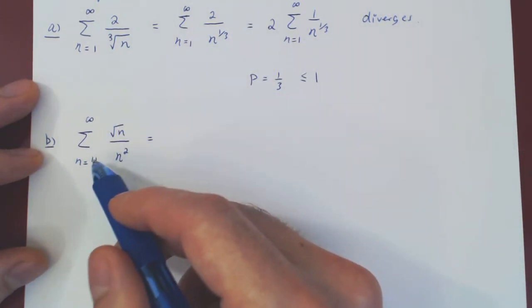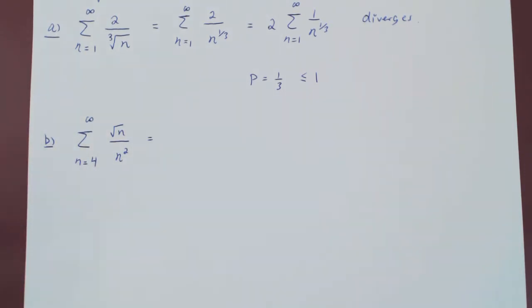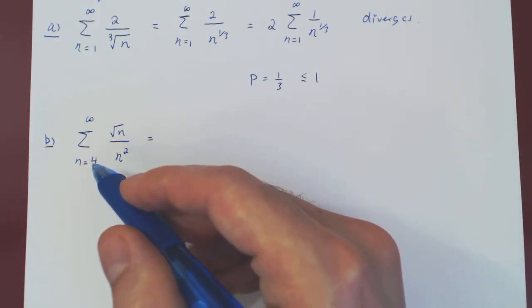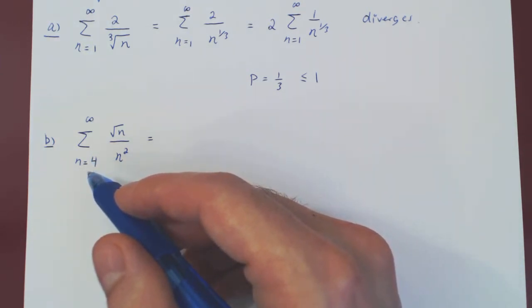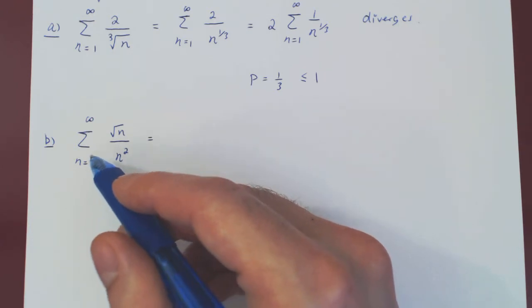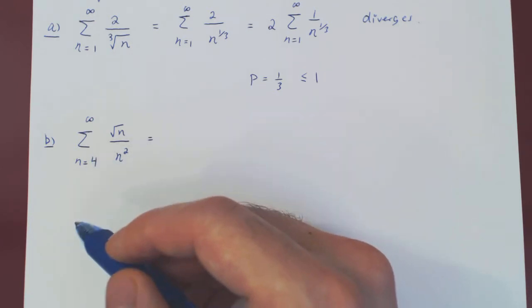And again, here we start summing at 4, but if you remember, this is irrelevant. When you look at a series, and you try and determine whether it converges or diverges, you can always ignore the first few terms. You can ignore the first 10 terms, the first 500 terms, it doesn't matter, as a finite sum of real numbers is always finite. So every result of any convergent or divergent series will not be affected by the starting point.